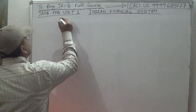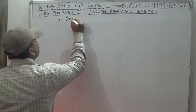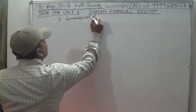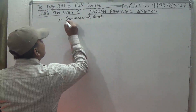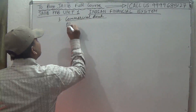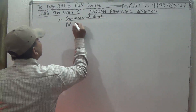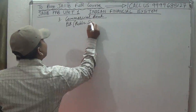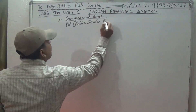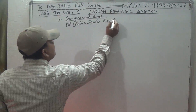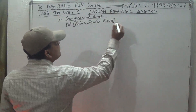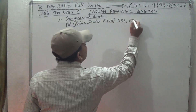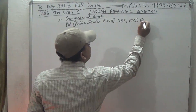Now we come to the third point, which is commercial banks. What is a commercial bank? First, it includes PSBs — Public Sector Banks. Examples of public sector banks are SBI, PNB, and BOB.